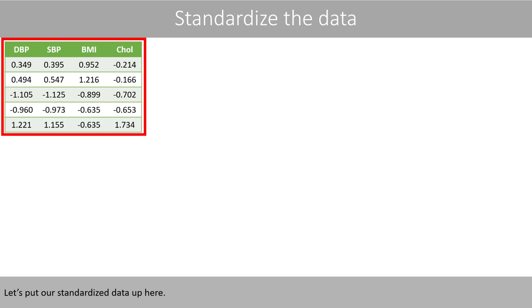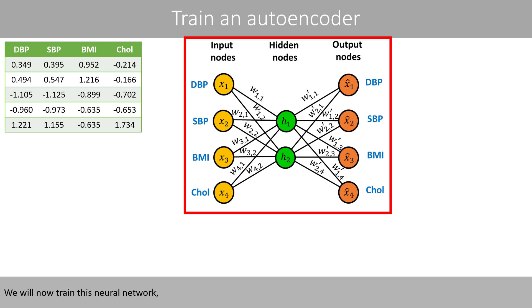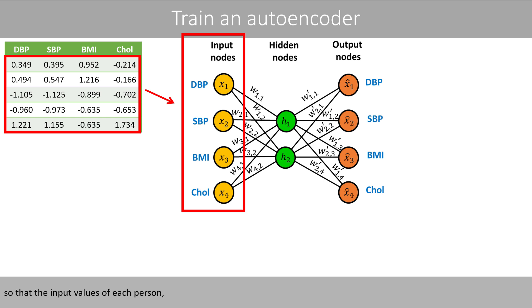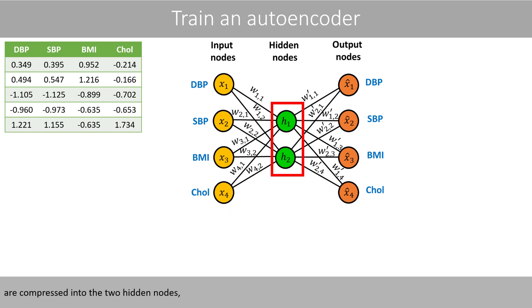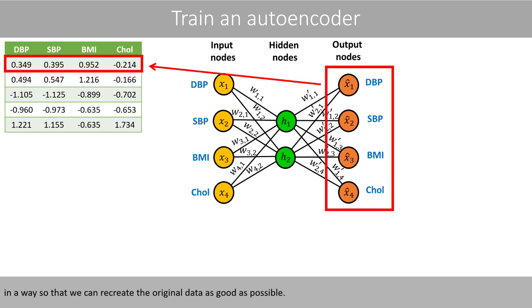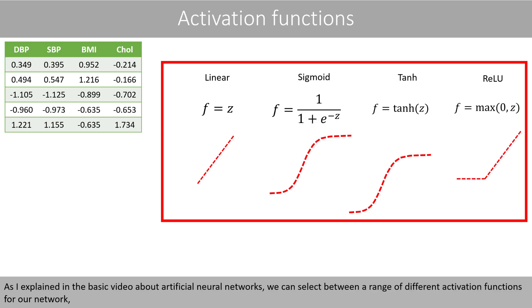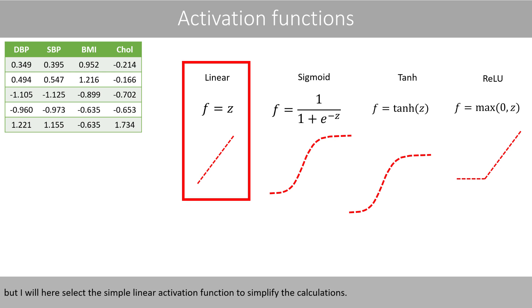Let's put our standardized data up here. We will now train this neural network so that the input values of each person are compressed into the two hidden nodes, in a way so that we can recreate the original data as good as possible. As I explained in the basic video about artificial neural networks, we can select between a range of different activation functions for our network, but I will here select the simple linear activation function to simplify the calculations.